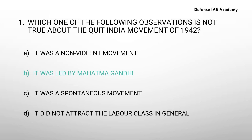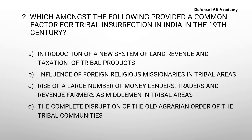Second question: which amongst the following provided a common factor for tribal insurrection in India in the 19th century? Option A: introduction of a new system of land revenue and taxation of tribal products. Option B: influence of foreign religious missionaries in tribal areas. Option C: rise of a large number of money lenders, traders and revenue farmers as middlemen in tribal areas. Option D: the complete disruption of the old agrarian order of the tribal communities. The answer is option D: the complete disruption of the old agrarian order of the tribal communities.